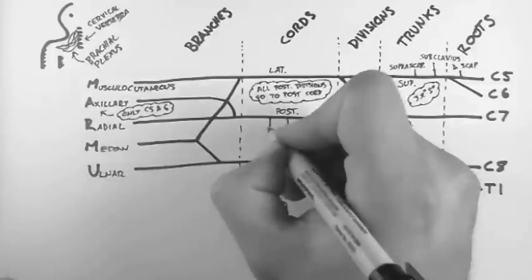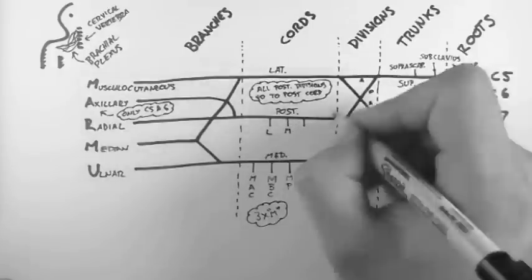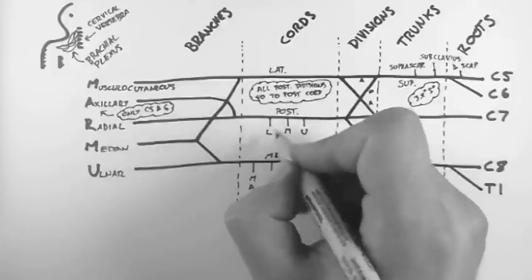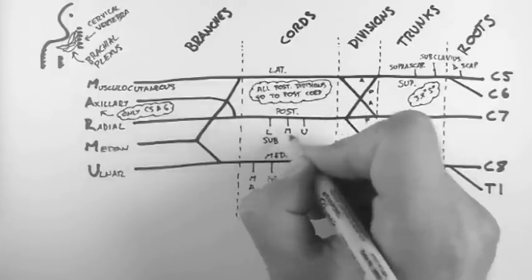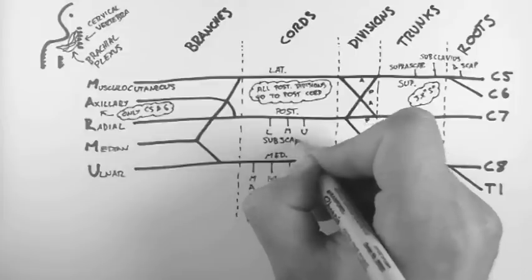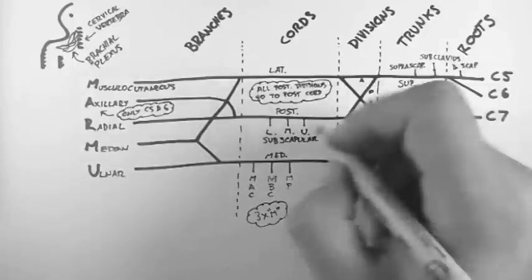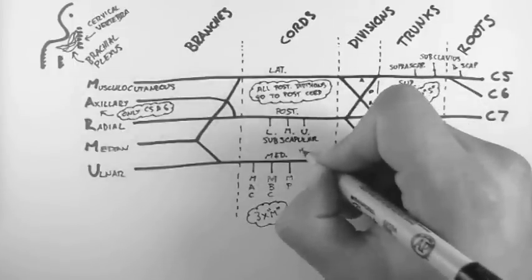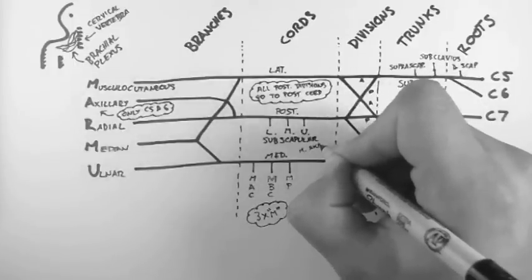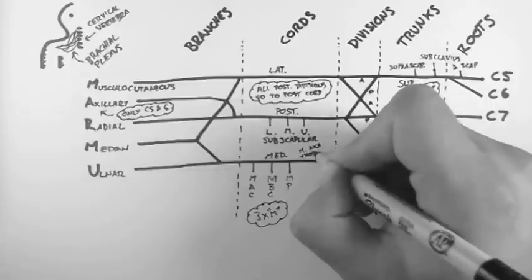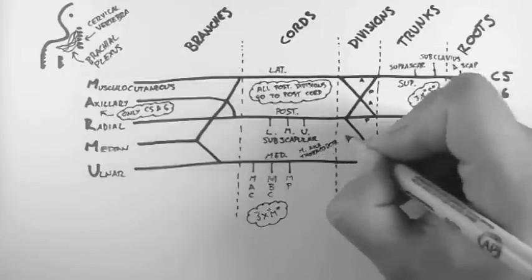Now there are three nerves coming off the posterior cord. And these are the lower, middle and upper subscapular nerves. Now the middle subscapular nerve is also known as a thoracodorsal nerve.